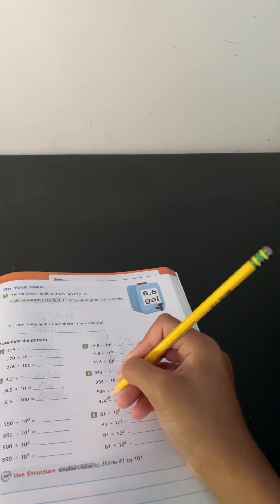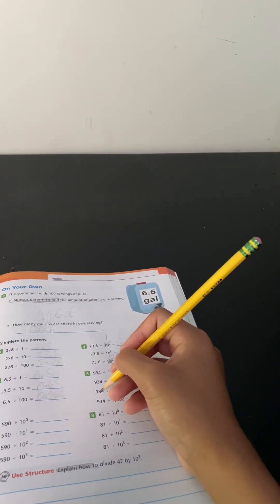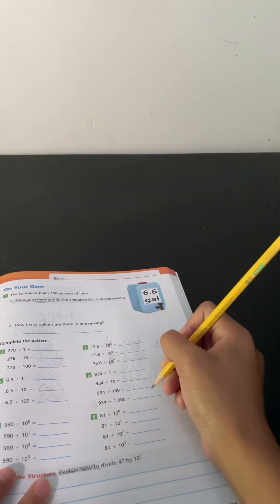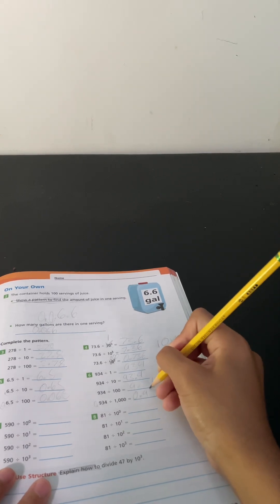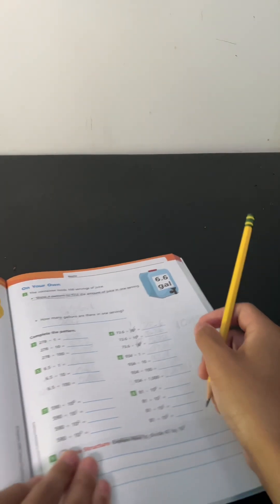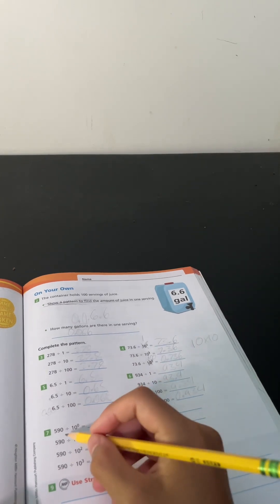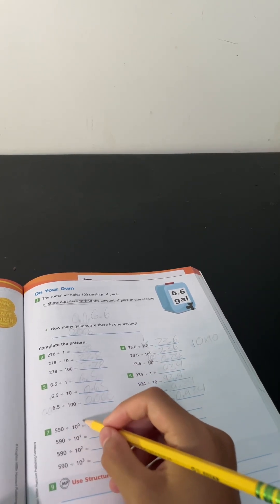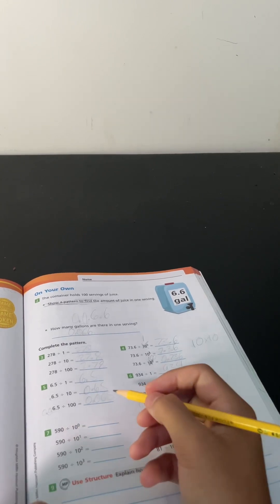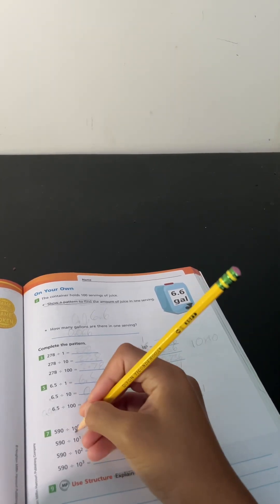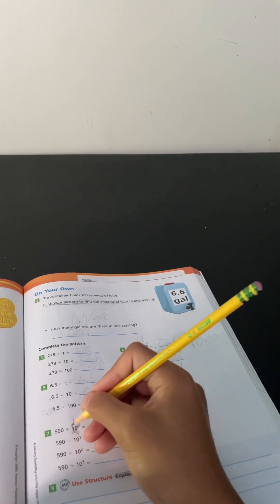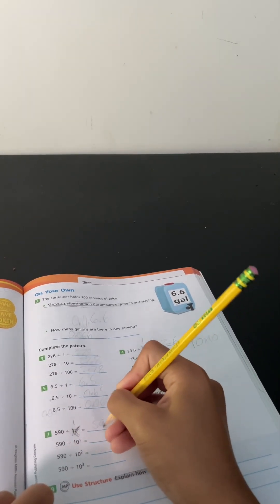590 divided by 10 to the power of zero. Anything to the power of zero is 1, so 10 to the power of zero is 1. 590 divided by 1 equals 590.